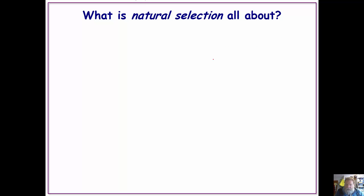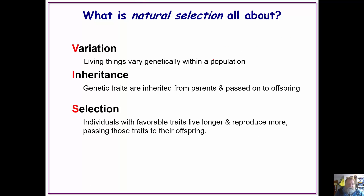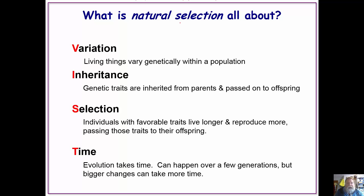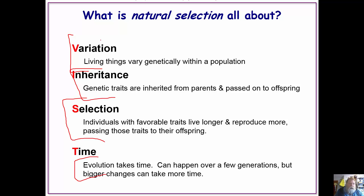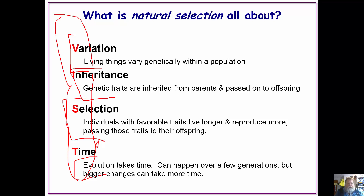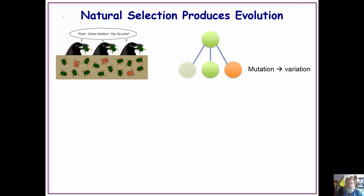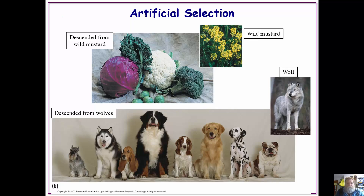To summarize natural selection: we see variation — living things vary within a population. Inheritance — genetic traits are inherited and passed from parents to offspring. Selection — individuals with favorable traits live longer and reproduce more. And time — evolution takes time. We will give you exceptions to all of these, but basically this is true. Thanks for listening.